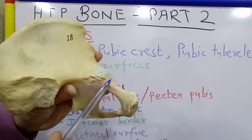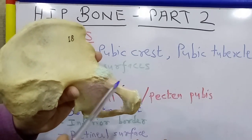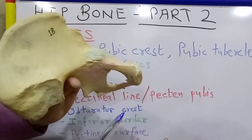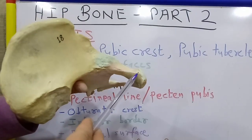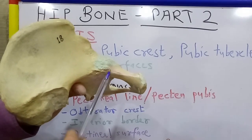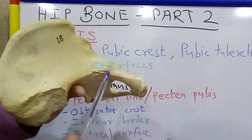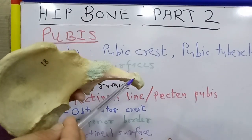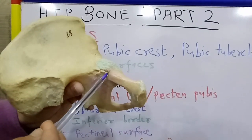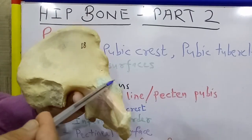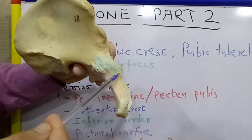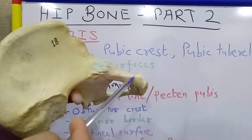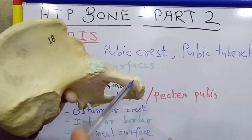The superior ramus, which passes superolaterally, also has three borders and three surfaces. This is the superior border which is also known as the pectineal line or pectinate line. It starts from just behind the pubic tubercle and ends at the posterior end of the ileopubic eminence. This eminence is the ileopubic eminence. So this is the pectinate line or superior border.